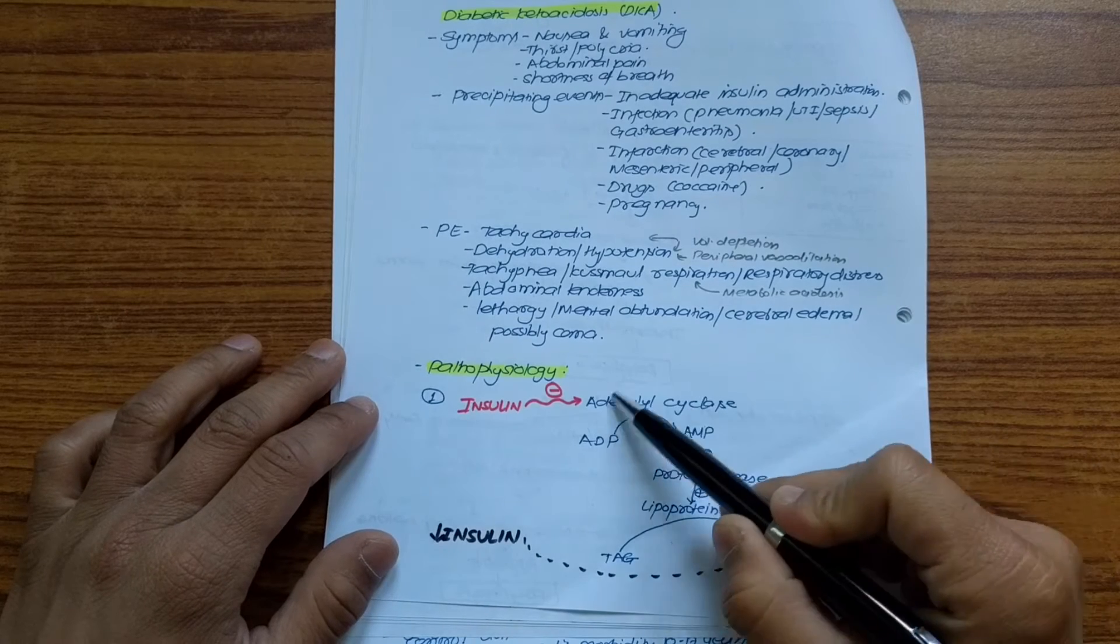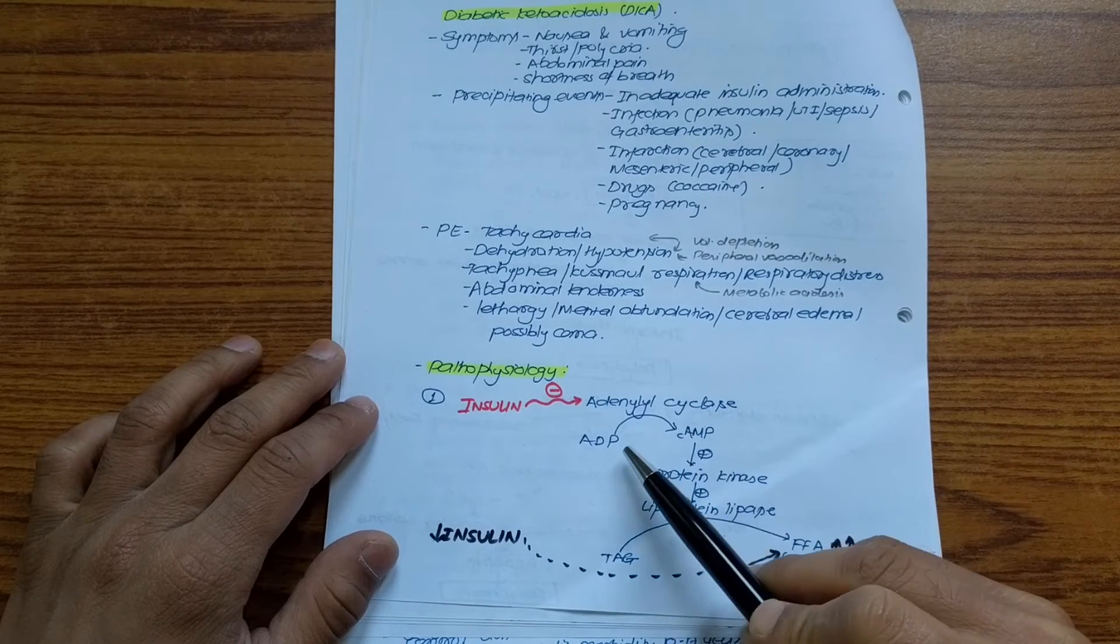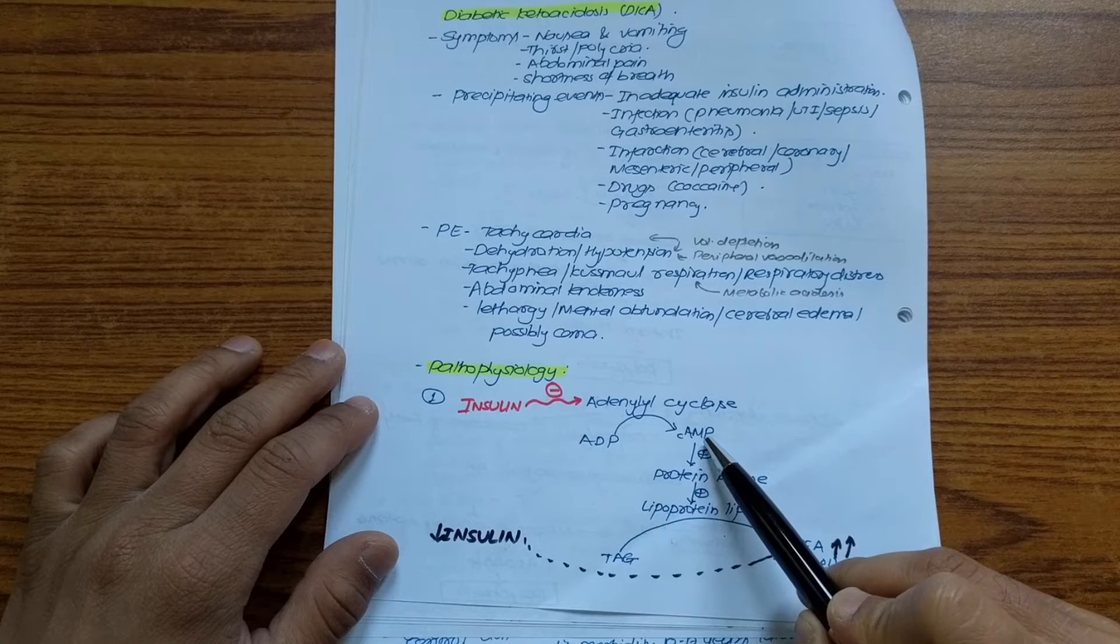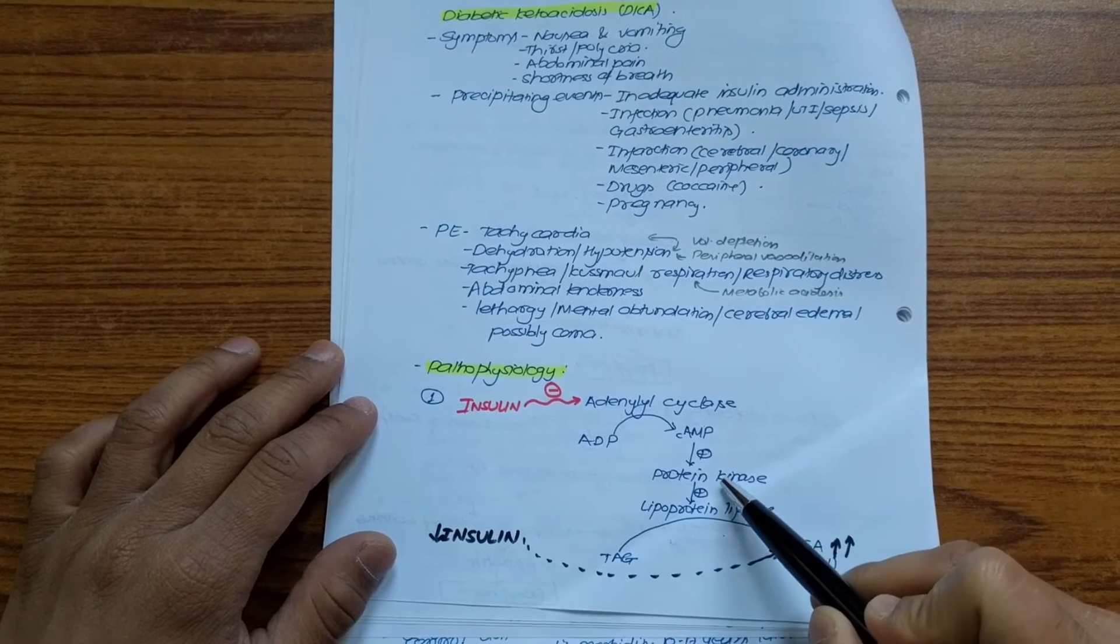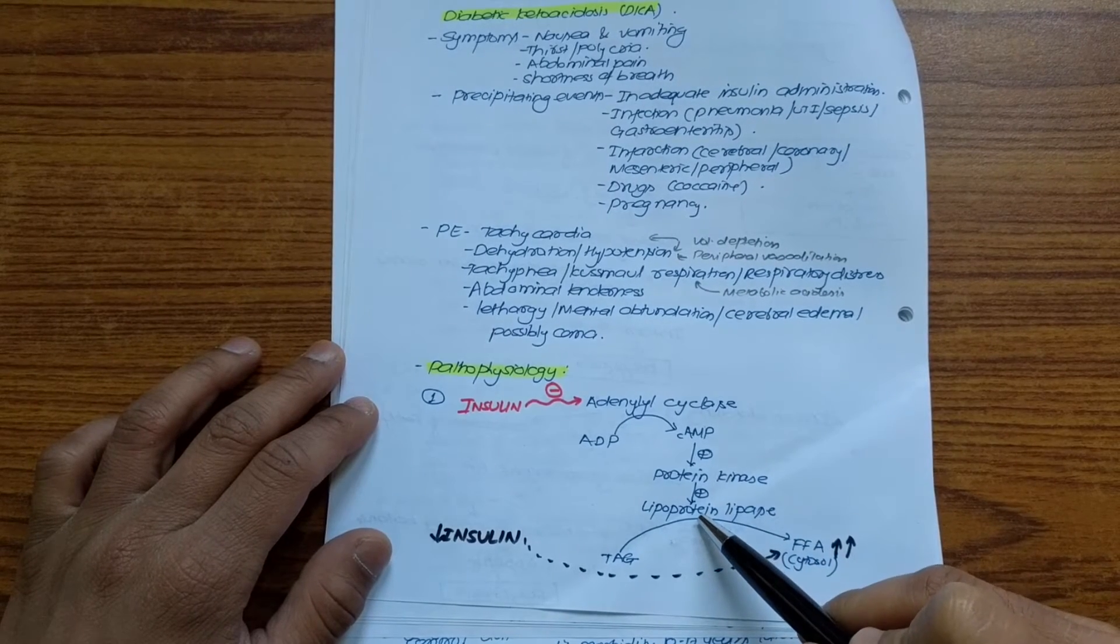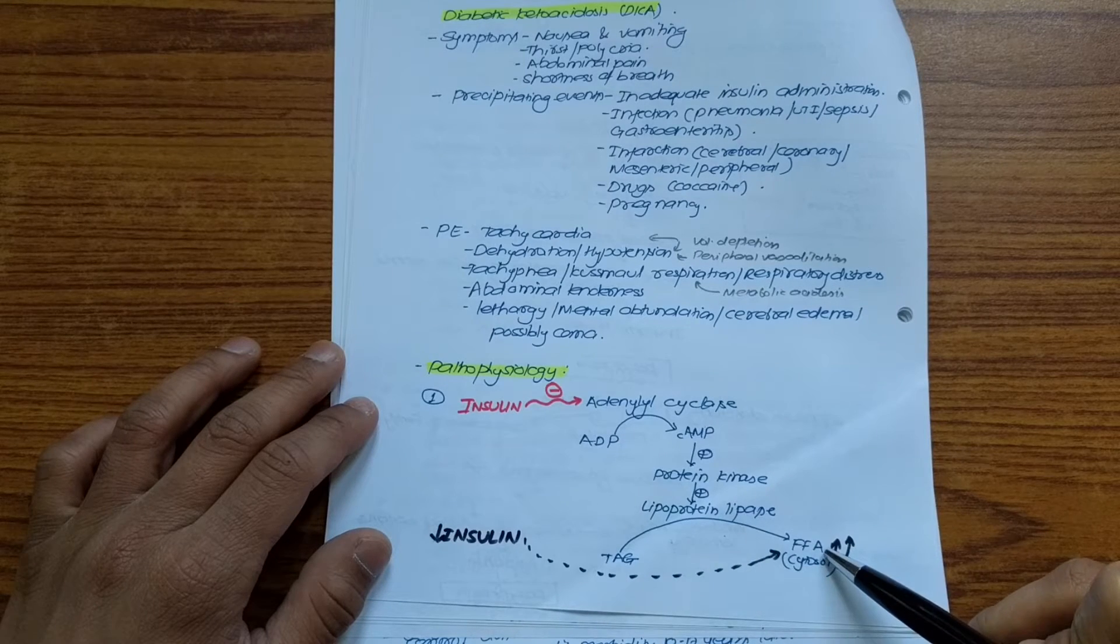This is the enzyme called adenylyl cyclase present in the cytosol. The function of adenylyl cyclase is to convert ADP into cyclic AMP. The cyclic AMP will in turn stimulate the enzyme protein kinase. The job of protein kinase is to stimulate the enzyme lipoprotein lipase, and the job of lipoprotein lipase is to convert triglycerol into free fatty acid.